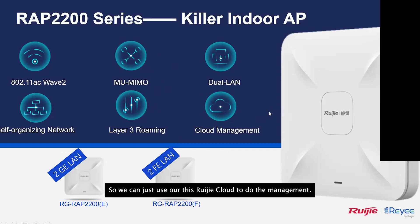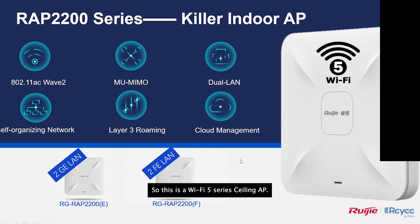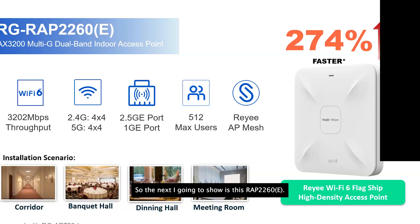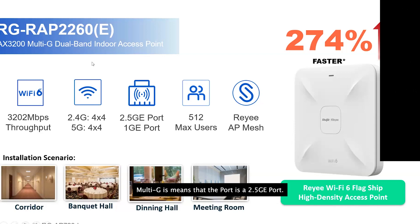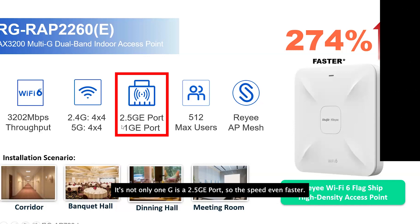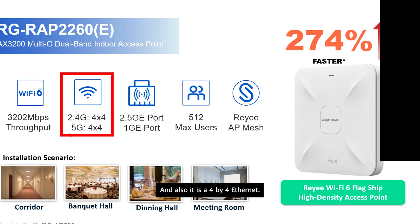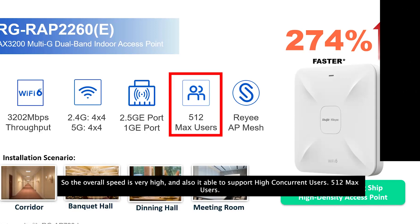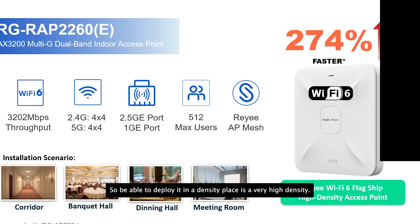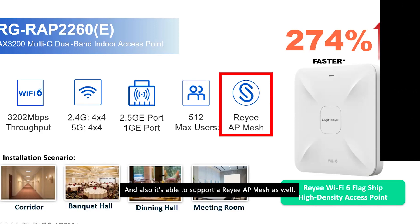The IP2260E is a ceiling AP with a maximum throughput of AX3200. It features a Multi-G port at 2.5G — not just 1G — for even faster speeds. It uses a 4x4 antenna configuration, supports up to 512 concurrent users for high-density deployments, and also supports Reyee Mesh.